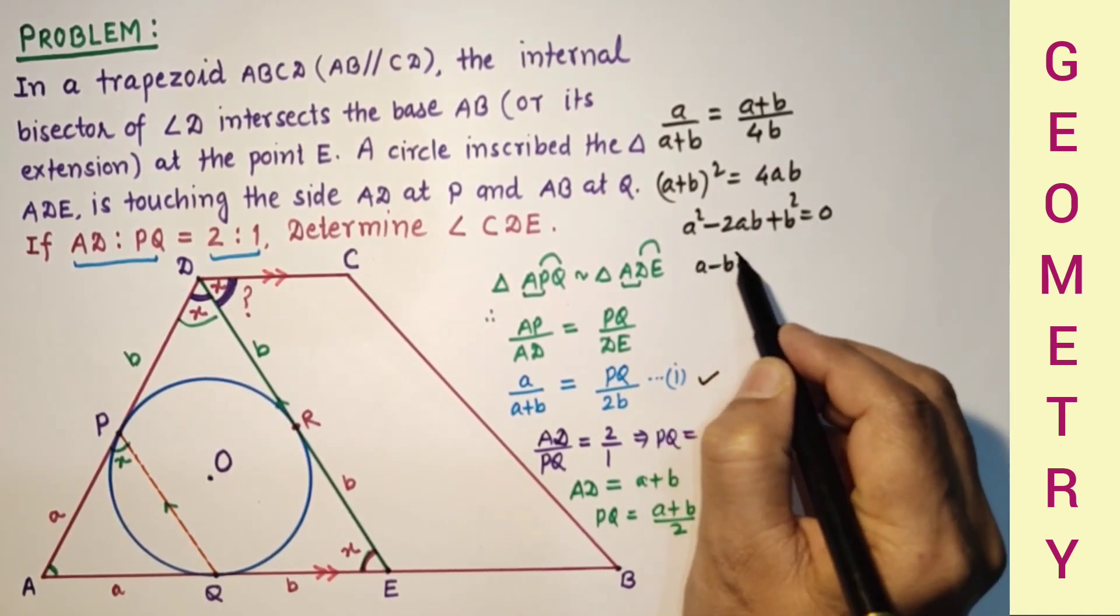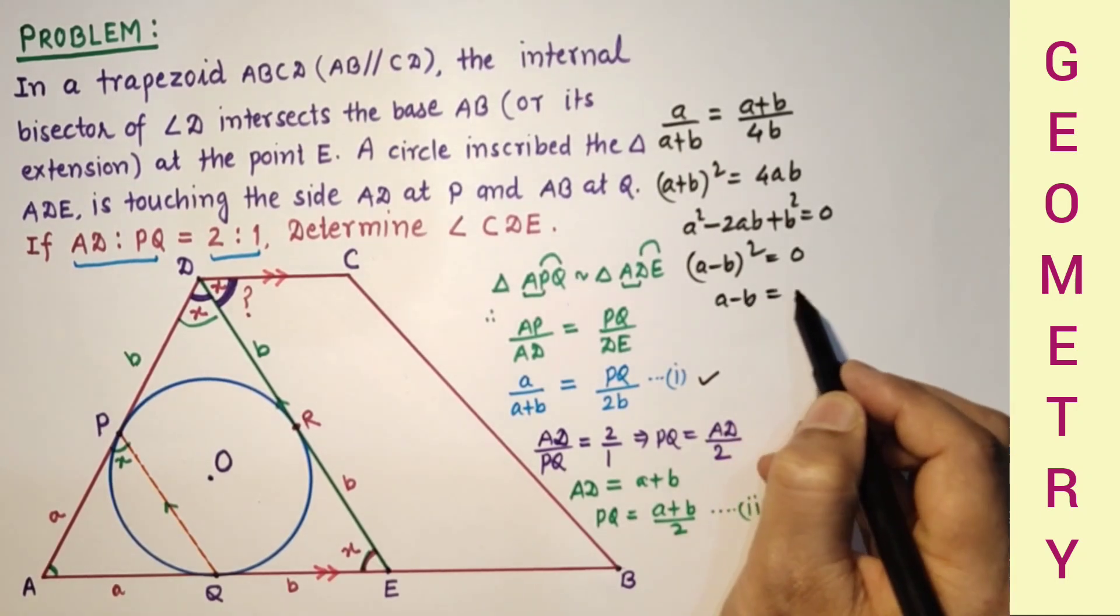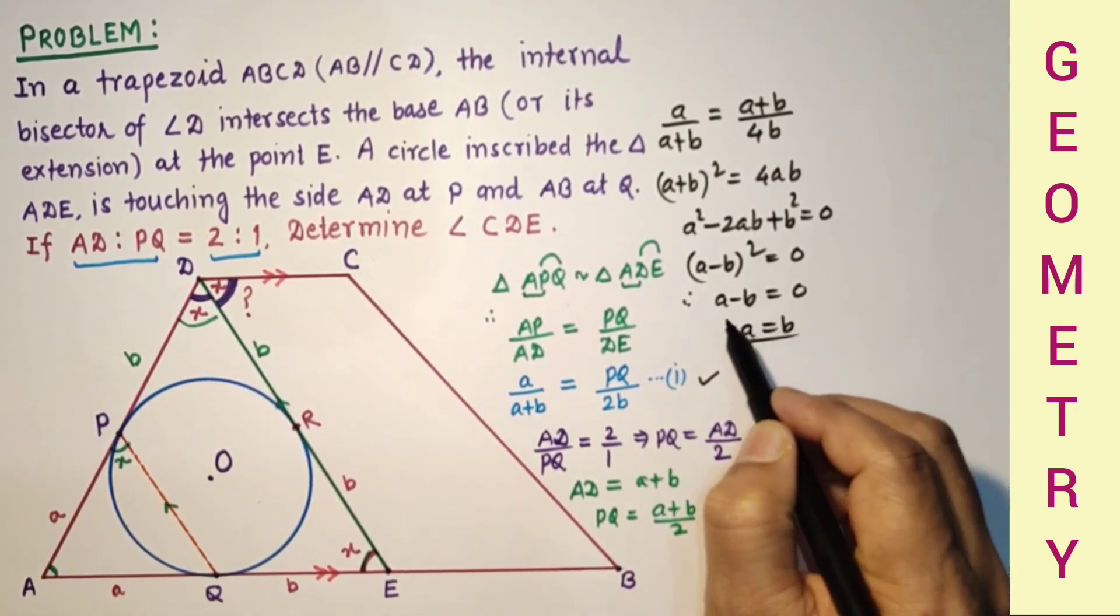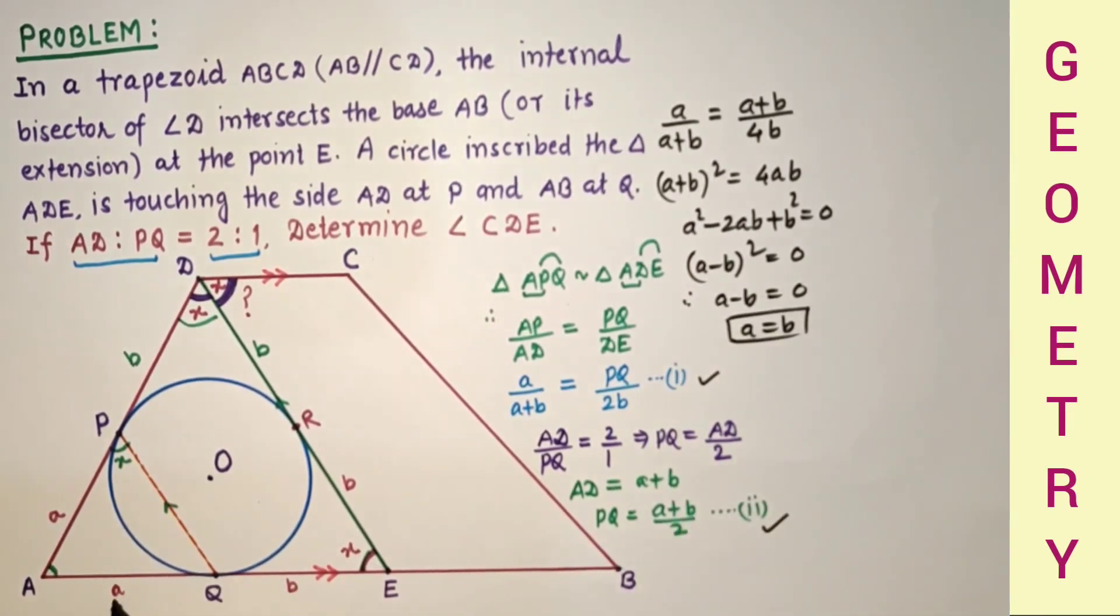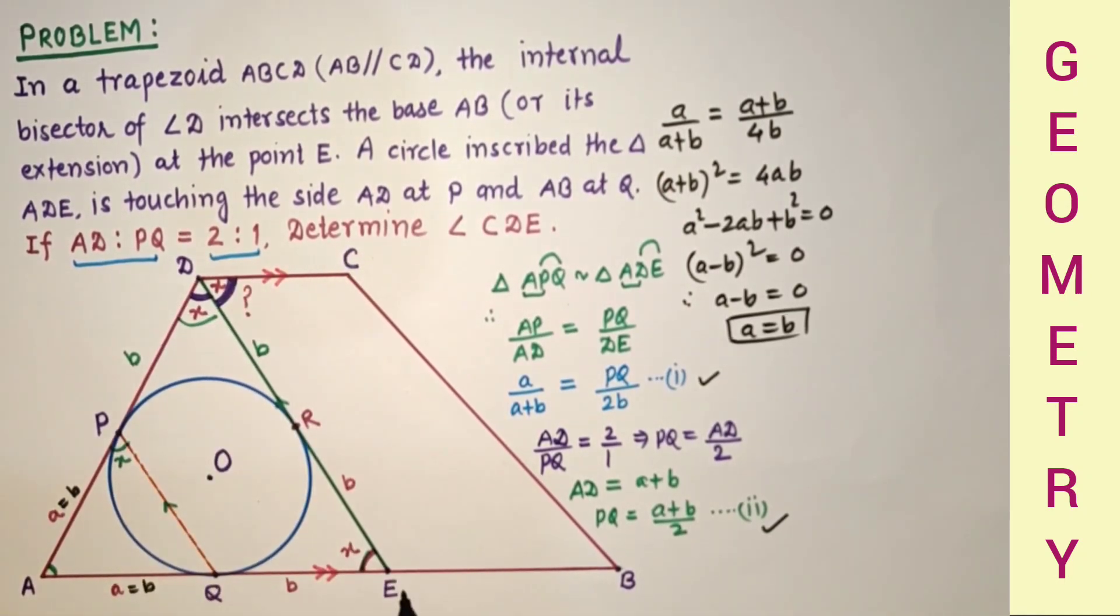That means A minus B the whole square is 0. A minus B is equal to 0, and therefore A is equal to B. A is equal to B, so this is B, this is B. So AD is 2B, AE is 2B, and ED is 2B.